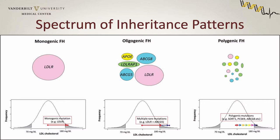Now, it's a little bit more complicated than that. There's really a spectrum of inheritance patterns, so let's use the example of familial hypercholesterolemia, or FH. There are some individuals with monogenic FH — they have a single variant in a gene, LDLR, with a fairly strong effect. The size of the circle represents the strength of the effect of the genetic variant on gene function, and that one single variant is enough to push a patient's LDL cholesterol from somewhere near the median to above the threshold for disease.